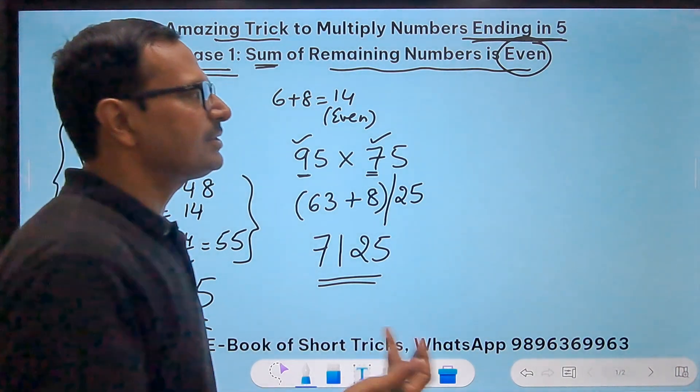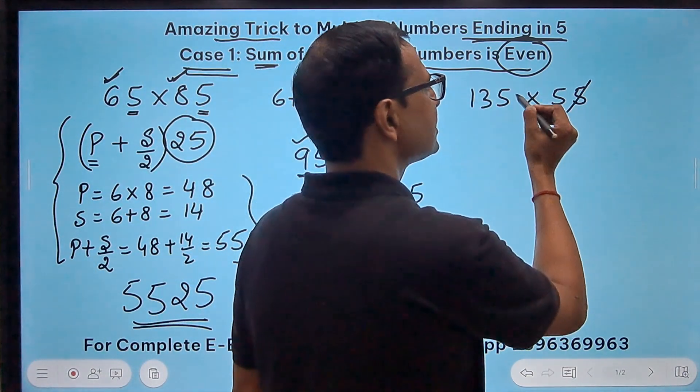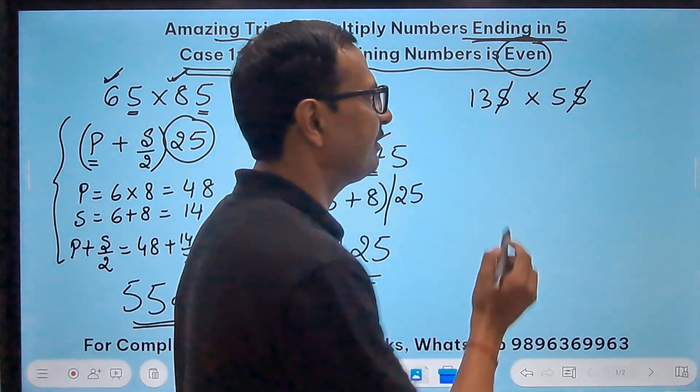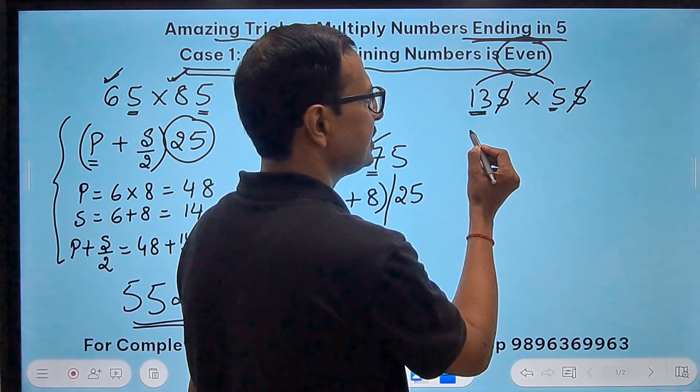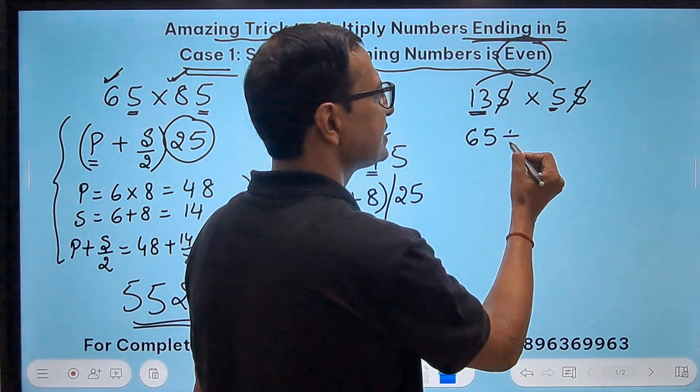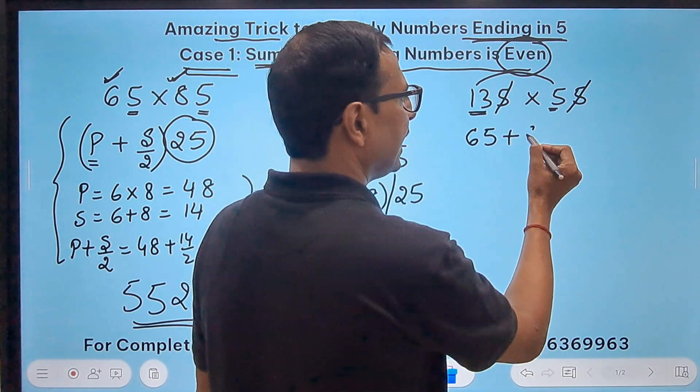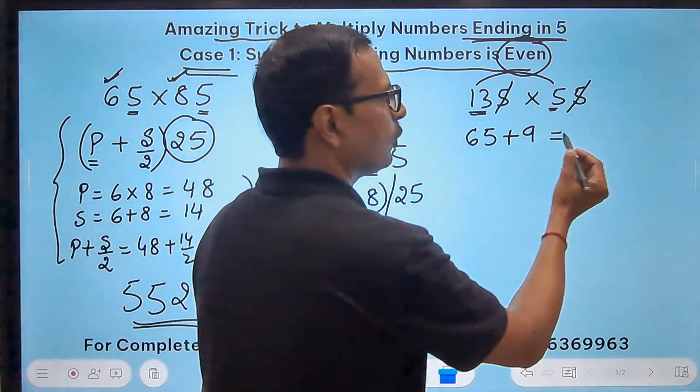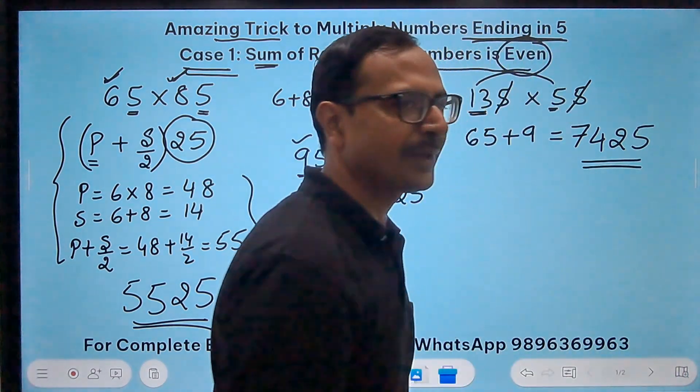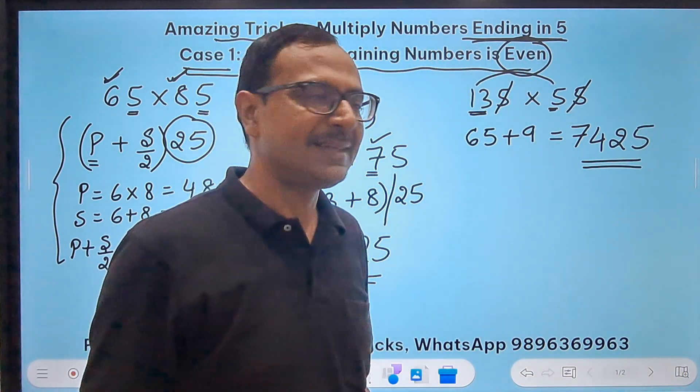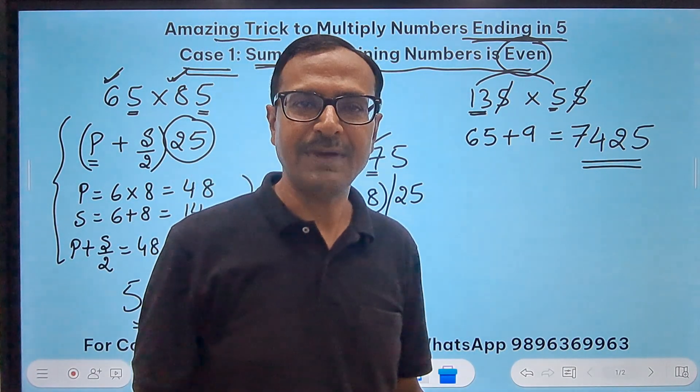If I have a three digit number 135 times 55, eliminate the last 5s. Now you have a 13 and a 5. Do the same thing. 13 times 5 is 65, plus 13 plus 5 is 18, and 18 upon 2 is 9. So you get 74, and just suffix 25 to the result you will get your answer. Where are the steps? The steps are all gone. Even with a three digit number we are getting to the answer very quickly.